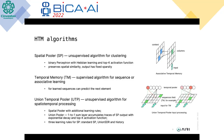Three learning rules are used in the Union Temporal Pooler. The first is the standard Spatial Pooler learning rule, which is Hebbian. The second is the 'Is-there' learning rule, which reinforces neurons of the Spatial Pooler that correspond to the current output of the UTP toward the current input. The third is the history learning rule, which reinforces currently activated Spatial Pooler neurons toward the moving history of inputs.